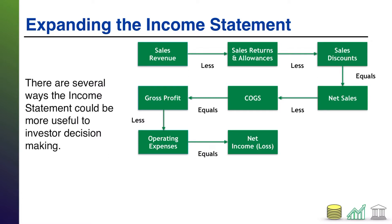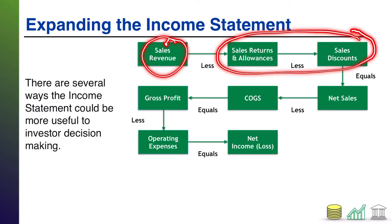But when we think about the different types of companies out there, we know that we could provide more information in the income statement than simply here were my revenues, here were my expenses, and therefore you can subtract the two. For instance, with merchandisers, instead of simply saying here were revenues and here were expenses, we can say here was the revenue from our sales, here were some reductions in that revenue, and therefore here were the net sales. Already, we're more informative than simply saying here's revenue.